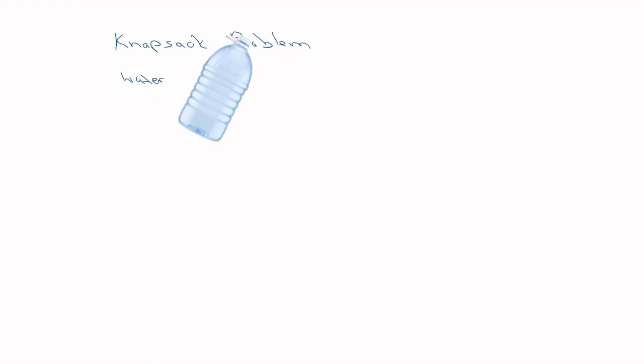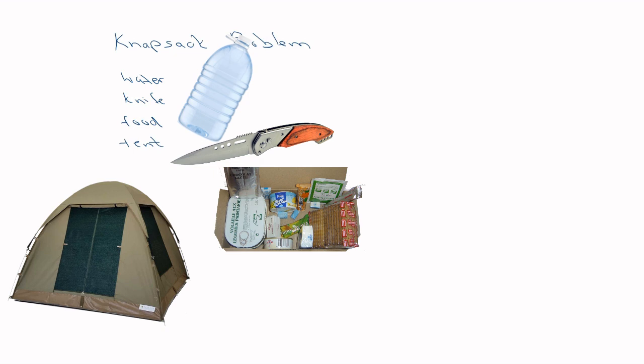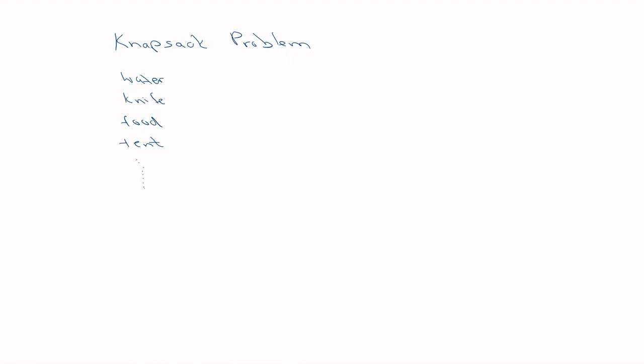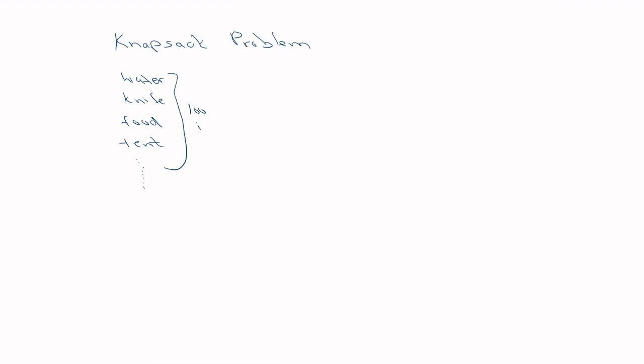The next problem is the knapsack problem. You have a bunch of items — water, a knife, food, rations, a tent, and many others. Let's say you have a total of 100 items. Each item has an associated weight and a perceived value, where higher value is typically better.